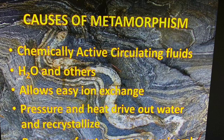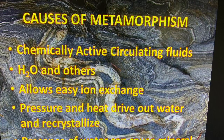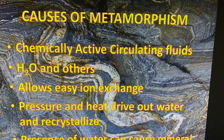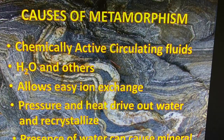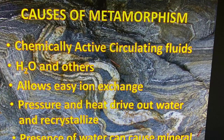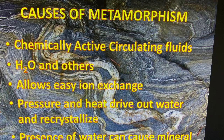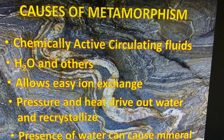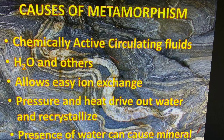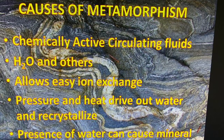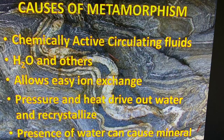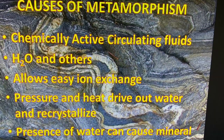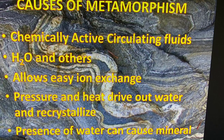The last cause is chemically active fluids — primarily water. Water is a natural solvent that easily dissolves things and allows ions to exchange between different compounds, which can change the chemical structure of the rock. Also, when you pressurize and heat a rock you push the water molecules out of minerals, changing the chemical structure. Water itself can change minerals — for example, turning mafic minerals into chlorite. Chemically active fluids simply refers to water causing ions to shift and move.